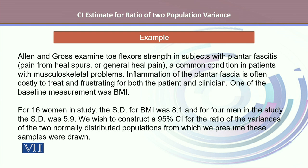One of the baseline measurements was BMI. Here in our sample, we've looked at 16 women in the study. The standard deviation for BMI for the first group was 8.1. And for four men in the study, the standard deviation was 5.9. We wish to construct a 95% confidence interval for the ratio of the variances for the two normally distributed populations from which we presume these samples were drawn.